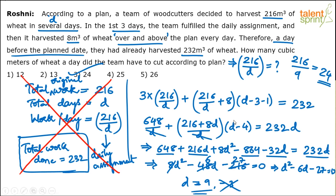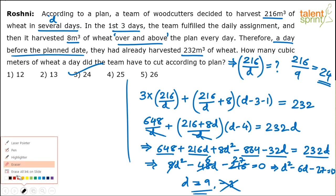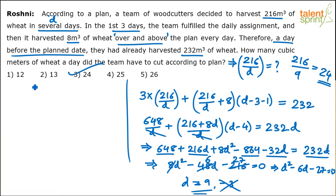We've established that 24 is the answer using the regular method. Let's now look at the substitution method — an easier way to get the answer. The equation is still important; you must frame it, but you need not fully solve it. The advantage is that without solving completely you can eliminate options and find the correct answer.